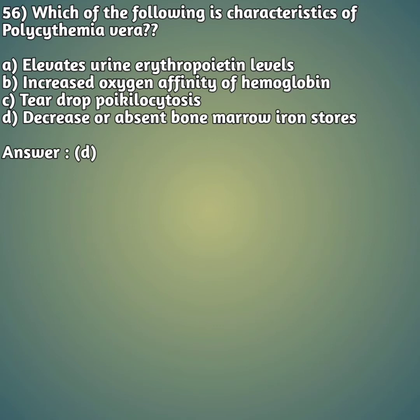Our 56th question: which of the following is a characteristic of polycythemia vera? Option A: elevated urine erythropoietin levels. Option B: increased oxygen affinity of hemoglobin. Option C: teardrop poikilocytosis. Option D: decreased or absent bone marrow iron stores.